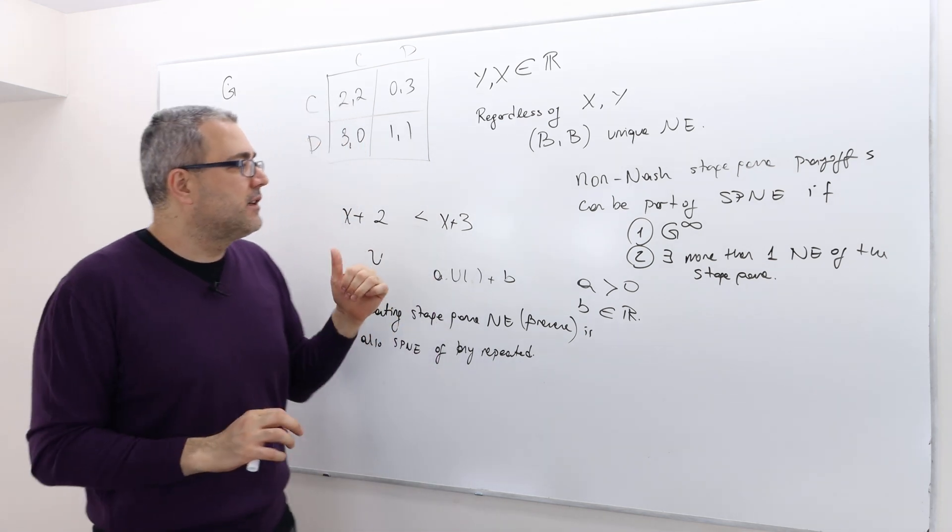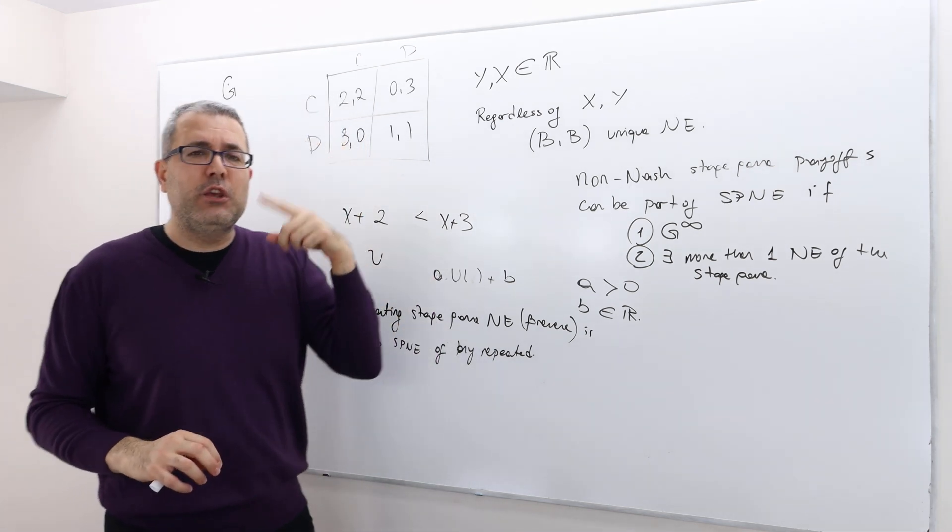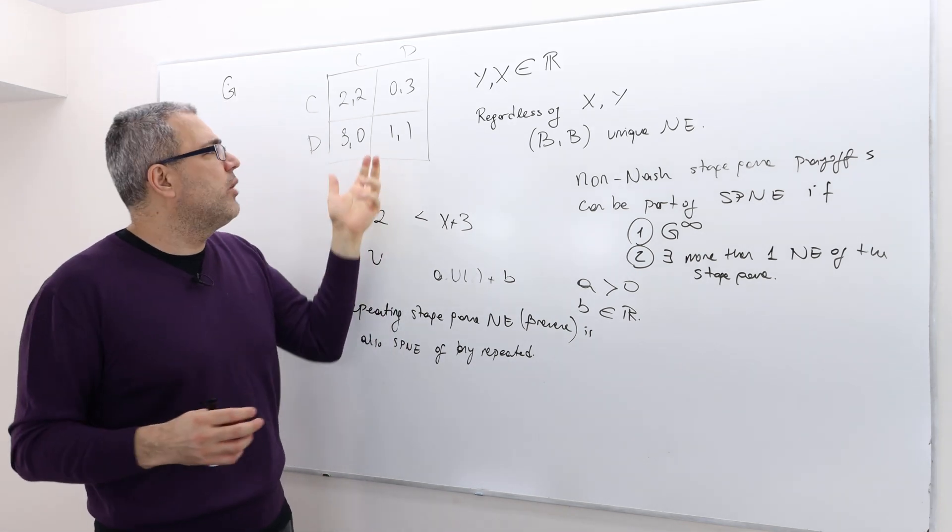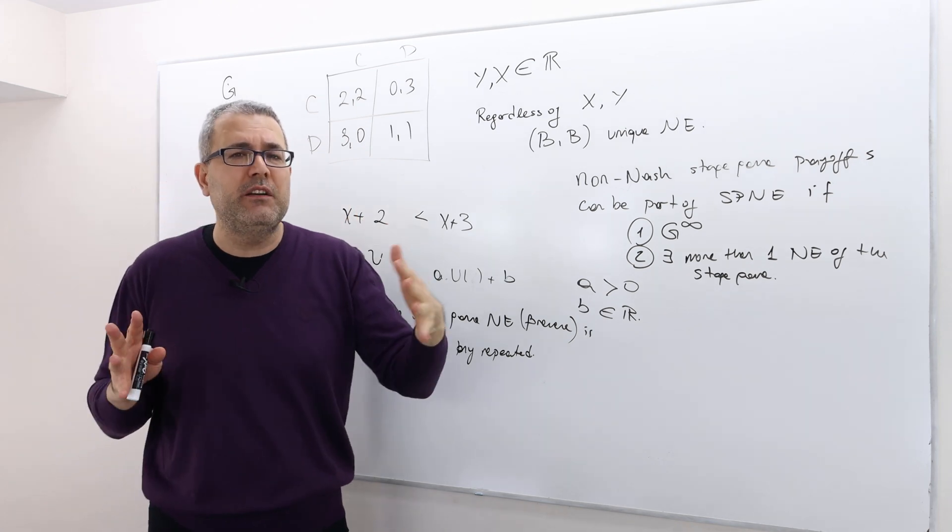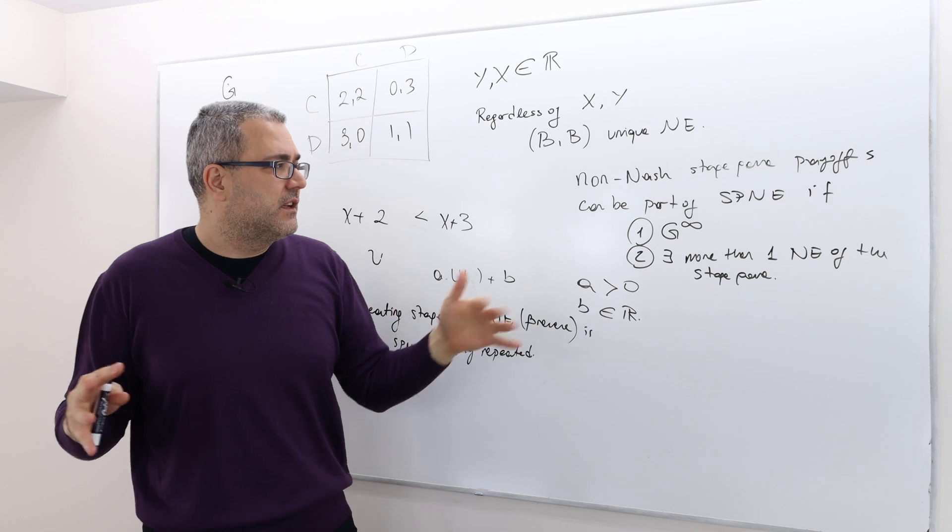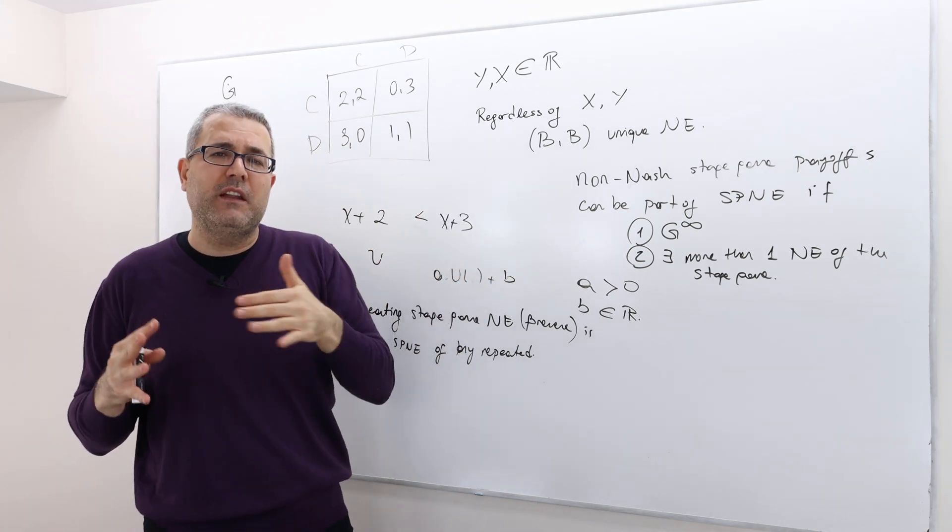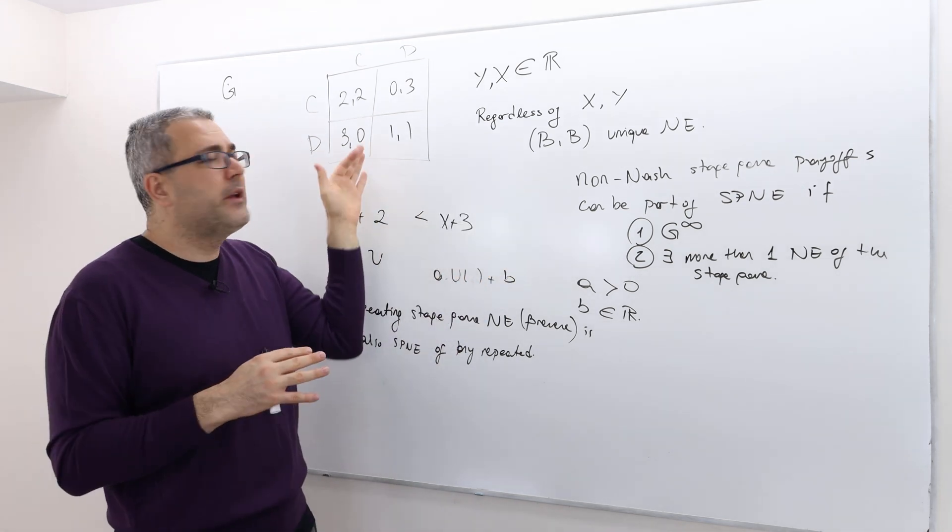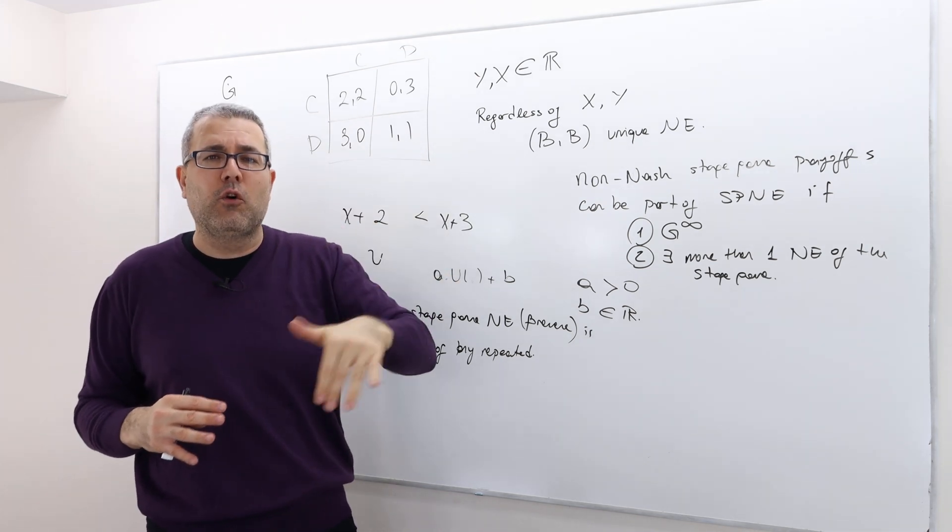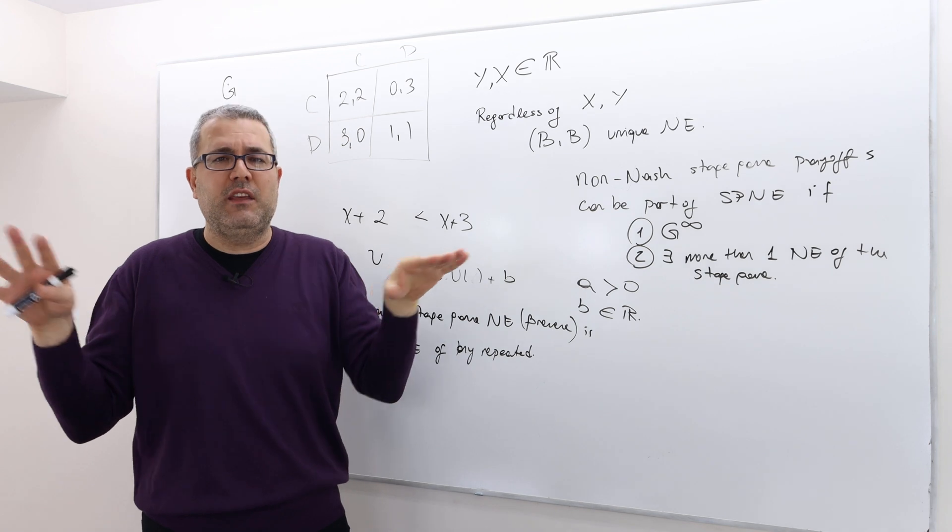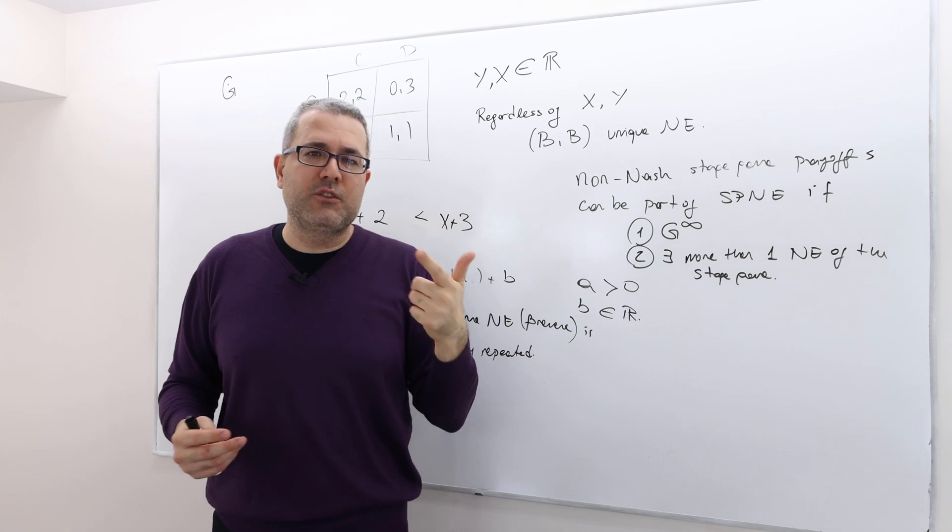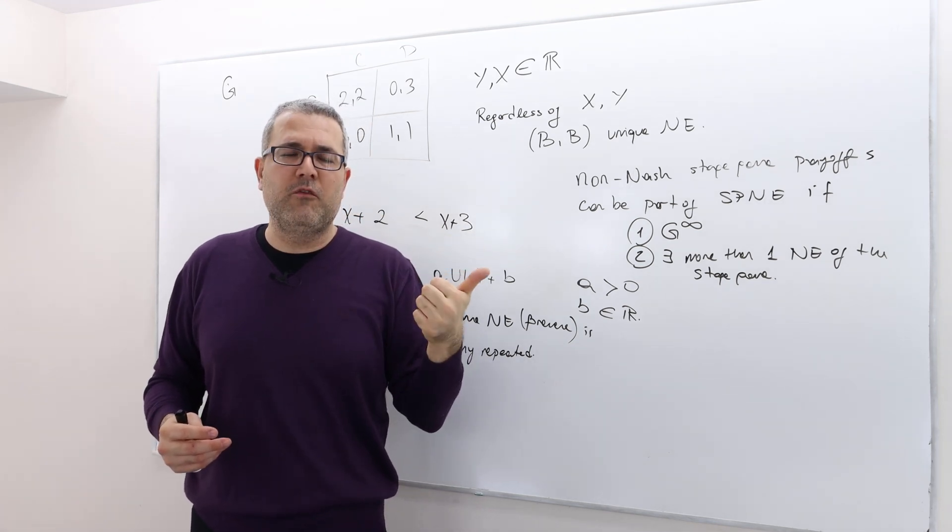Therefore, in a subgame perfect Nash equilibrium in a finite horizon game like Prisoner's Dilemma, C-C or any other non-Nash stage game payoffs cannot be achieved in the last stage. Because there's a unique Nash equilibrium in Prisoner's Dilemma, whether you repeat this game two periods or ten periods or a hundred periods, it is irrelevant. The unique subgame perfect Nash equilibrium is repeating the Nash stage game over and over again.